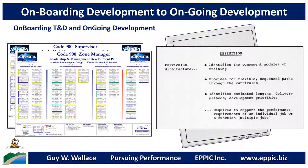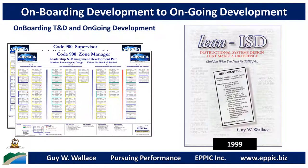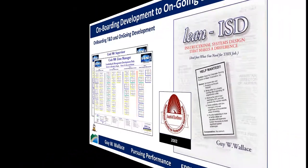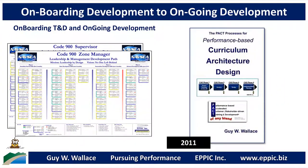This is all targeted to support the performance requirements of an individual job or a function of multiple jobs. My 1999 book, Lean ISD, addresses curriculum architecture design as one of three instructional systems design methodology sets I've developed as a consultant since 1982. That book won a 2002 award from ISPI, my professional home. In 2011, I updated Lean ISD and reconfigured that content into a series of books, one of which focuses specifically on curriculum architecture design.